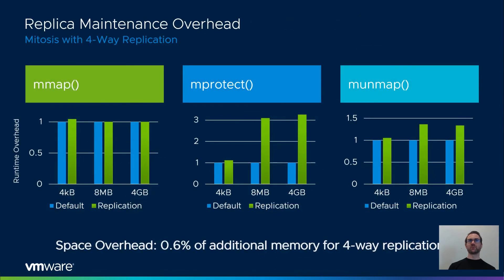We've shown that Mitosis improves performance. This evaluation measures the cost of maintaining the replica page tables. We modify the page tables through a series of mmap, mprotect, and munmap operations, where the graphs show the overheads of 4-way replication for 4KB, 8MB, and 4KB memory regions respectively. For the mmap operation, Mitosis is within 4% of the Linux default. For munmap, Mitosis observes a 30% slowdown despite maintaining four replicas. mprotect on large memory regions reveals a slowdown of 3.2x due to maintenance of the four page table replicas. Overall, there is about 0.6% of additional memory needed to hold all four replica copies.